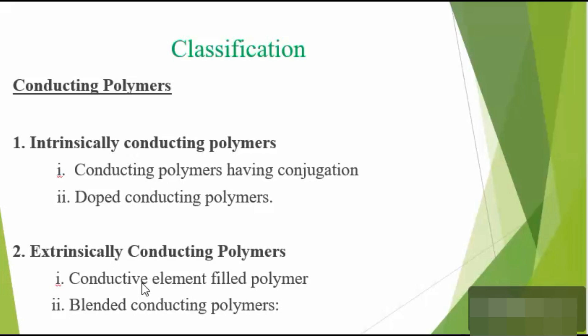In conductive element filler polymers, certain conductive elements like carbon black, metallic oxides, metallic fibers, etc. are added to the polymer. The polymer acts as a binder to hold all these ingredients. The second sub-type is blended conducting polymers. These polymers are prepared by blending or mixing a conventional polymer and a conducting polymer. That covers the classification of conducting polymers.